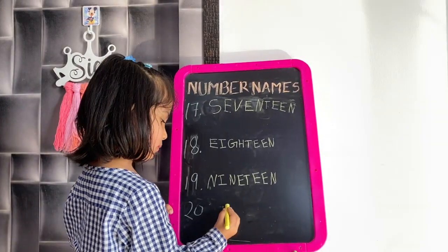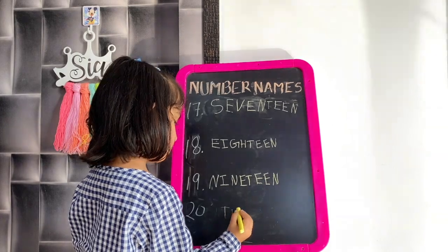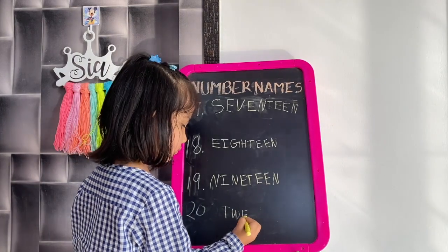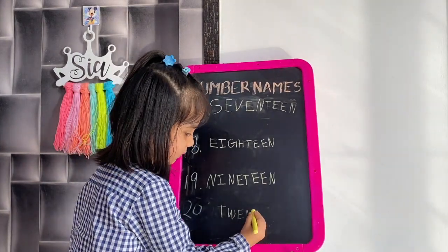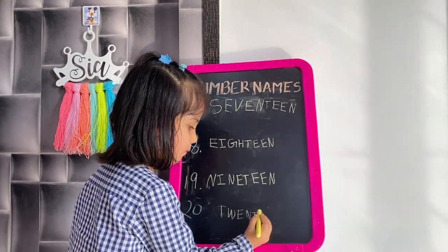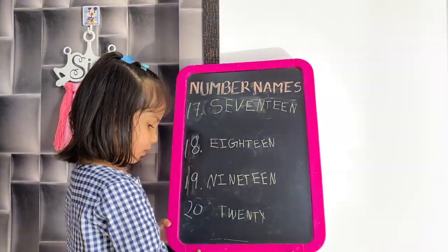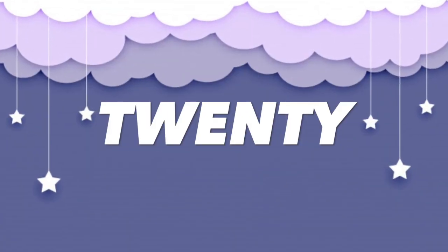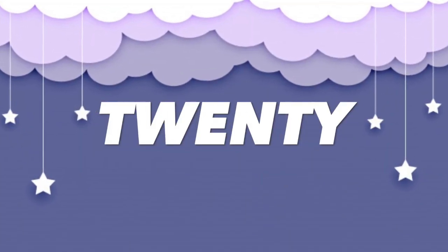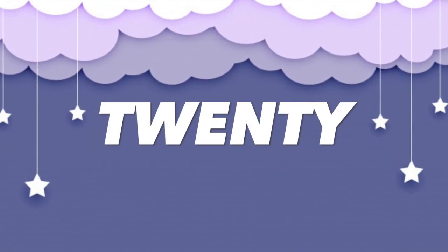Now I will write 20. T, W, E, N, T, Y. 20. T, W, E, N, T, Y. 20.